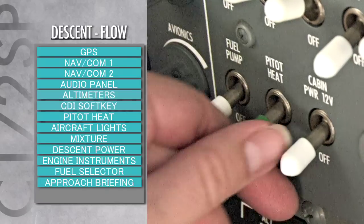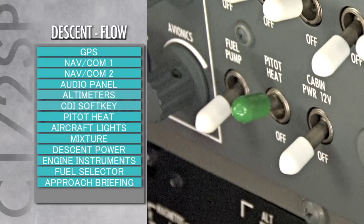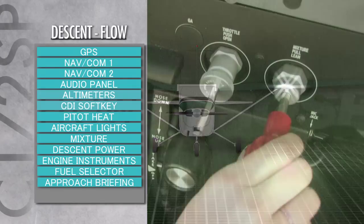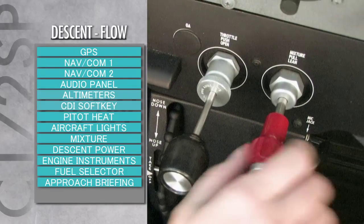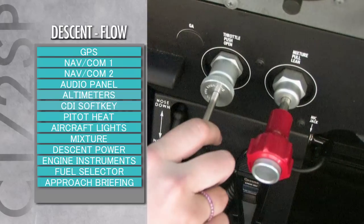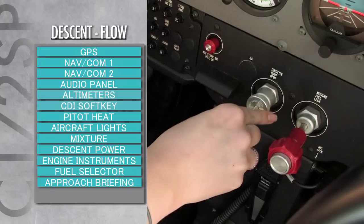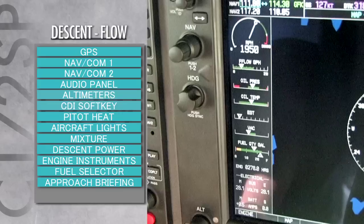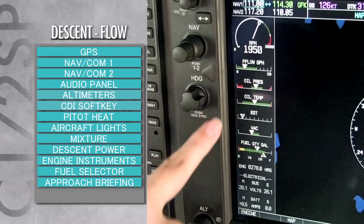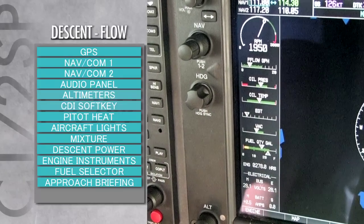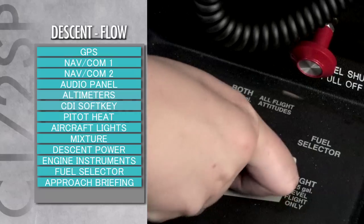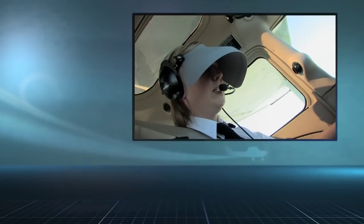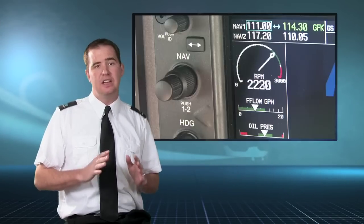Pitot heat: select pitot heat on if descending through visible moisture. Aircraft lights: pulse light on at the top of descent. Mixture: adjust for smooth engine operation as necessary. Descent power: adjust power to desired RPM setting and rate of descent. Engine instruments: monitor oil pressure, oil temperature, ammeter, and vacuum. Fuel selector: both. Approach briefing: complete. Each one of these items is necessary in order to conduct a safe instrument approach.